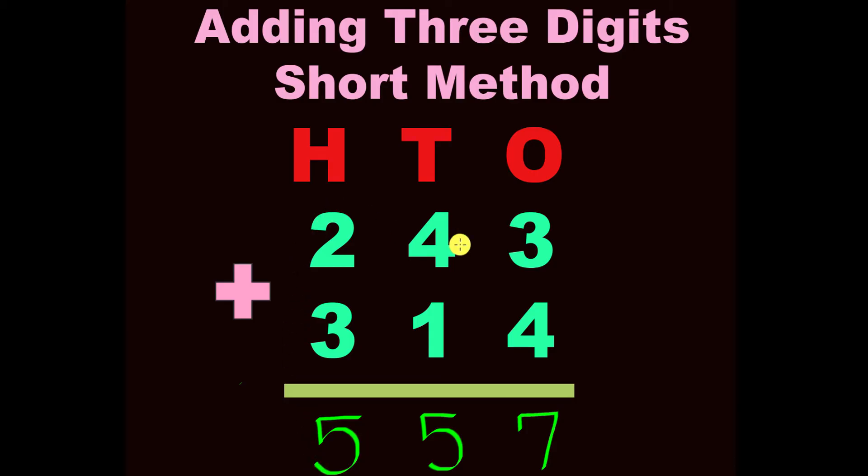After you have added from right to left, you should now have your answer, which is now the whole number. Let's read our answer. 557. Let's do that again.